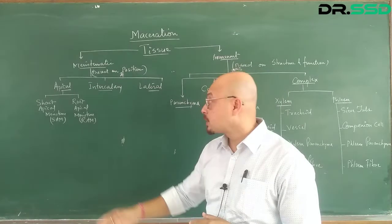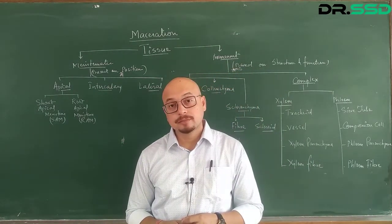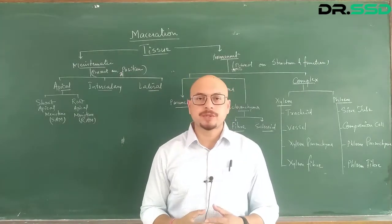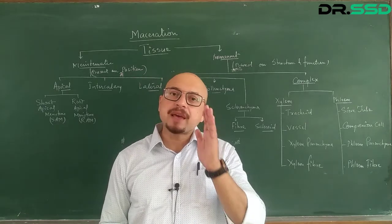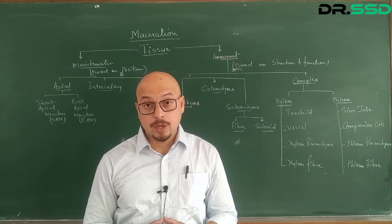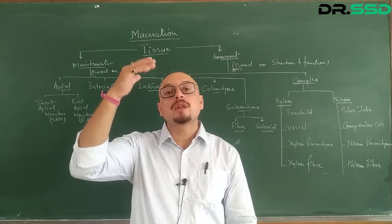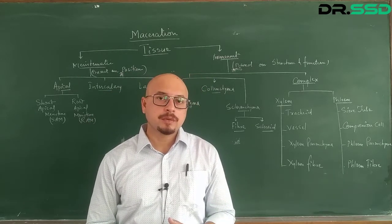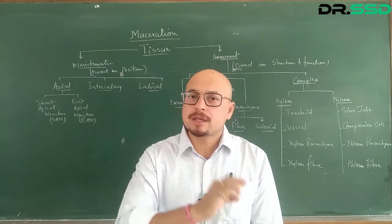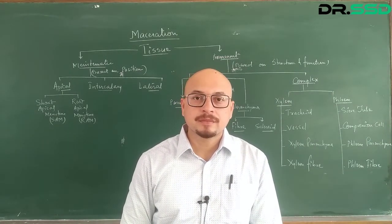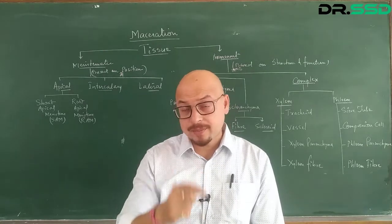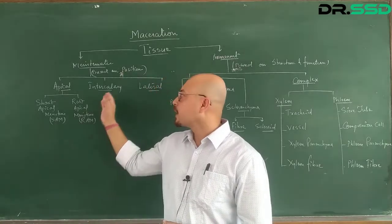The second type of meristematic tissue is intercalary. Intercalary means the distance between two nodes, which is termed the internode. So this meristem is responsible for the elongation of the internodal distance. When each and every internode increases in length, the overall length of the plant increases. For example, in crop plants like sugarcane, the economically important part is the stem. The more elongated the stem, the more economically viable it becomes. So who is responsible for the elongation of this internodal distance? The intercalary meristem.